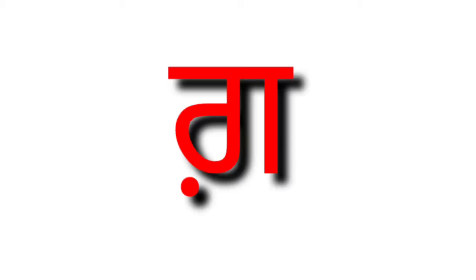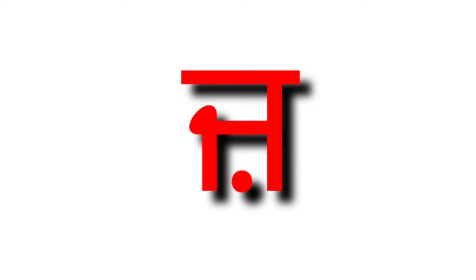If there is a small dot below the Punjabi letter Gha, it is pronounced as Gha. If there is a small dot below the Punjabi letter Jha, it is pronounced as Zha.